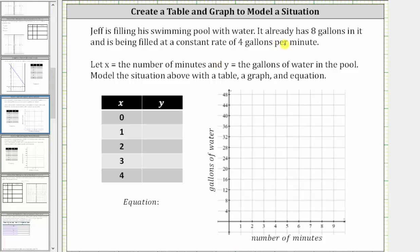Jeff is filling his swimming pool with water. It already has eight gallons in it and is being filled at a constant rate of four gallons per minute. Let x equal the number of minutes and y equal the gallons of water in the pool. Model the situation above with a table, graph, and equation.